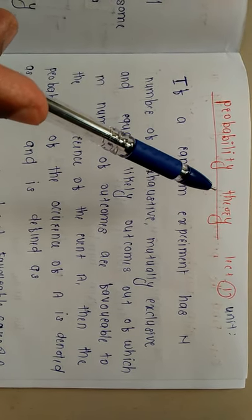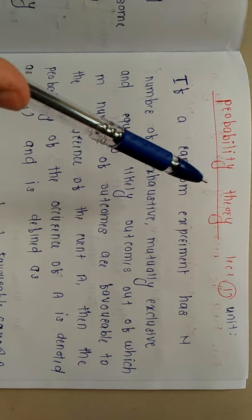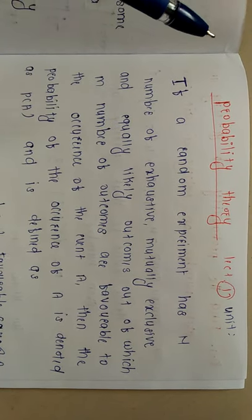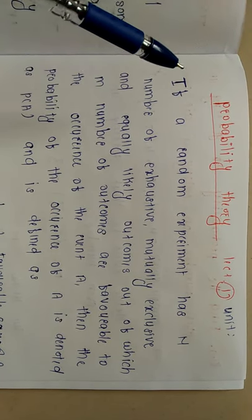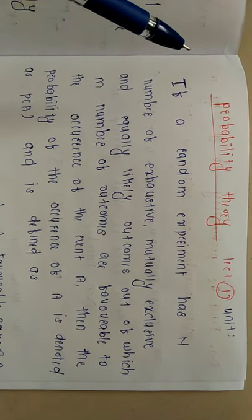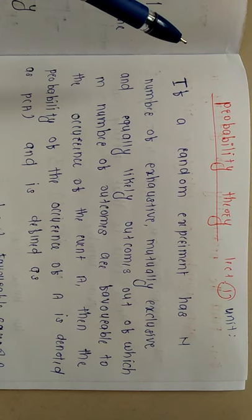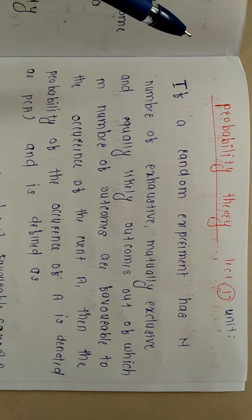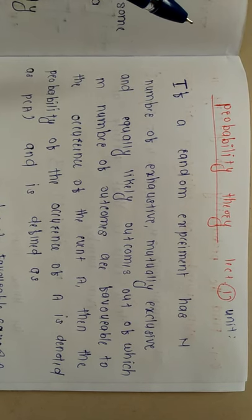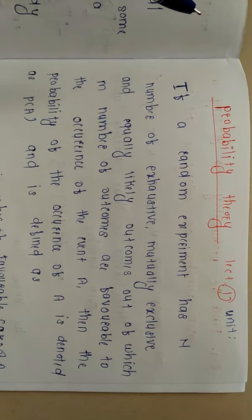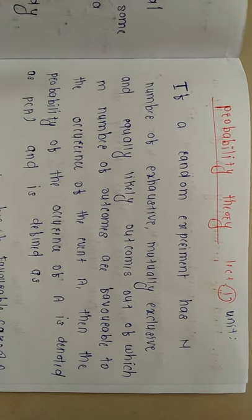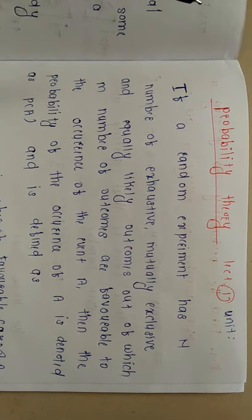In that, firstly, what is the meaning of event? Event means what? Throwing a dice — this is an example of an event. Next, tossing a coin — this is also an event. How to find the probability of that event?